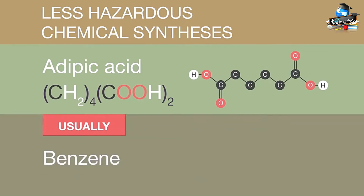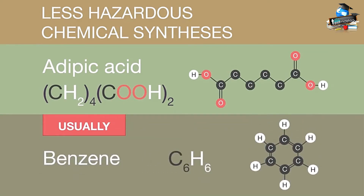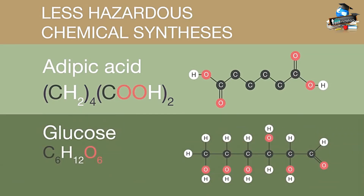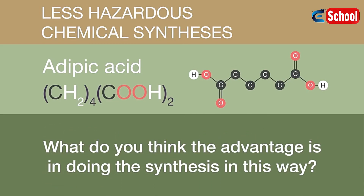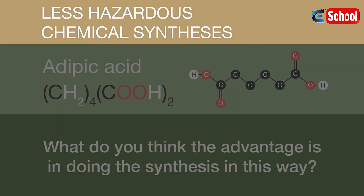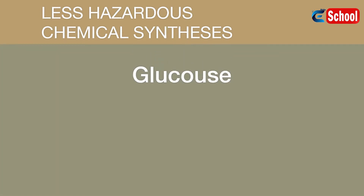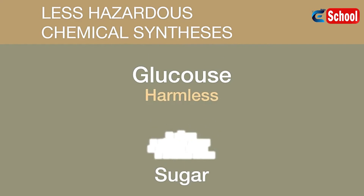Usually benzene is used to make adipic acid, but unfortunately benzene is carcinogenic, or cancer-causing. Instead, glucose and a special enzyme extracted from genetically modified bacteria can be used to produce adipic acid. The advantage is that glucose is harmless — it is essentially sugar. So conducting the synthesis in this way protects the workers who would otherwise come into contact with carcinogenic benzene.